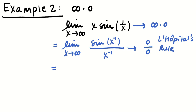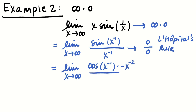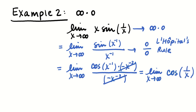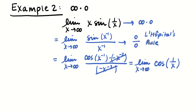I'll take the derivative of the top and bottom separately. The derivative of sine is cosine, leave the inside the same, and multiply by the derivative of the inside: the derivative of x to the negative 1 is negative x to the negative 2. The denominator's derivative of x to the negative 1 is also negative x to the negative 2. Those cancel, leaving the limit as x approaches infinity of cosine(x to the negative 1). As x approaches infinity, 1/x goes to 0, so this approaches cosine(0) which is 1. So infinity times 0 was not equal to 0.